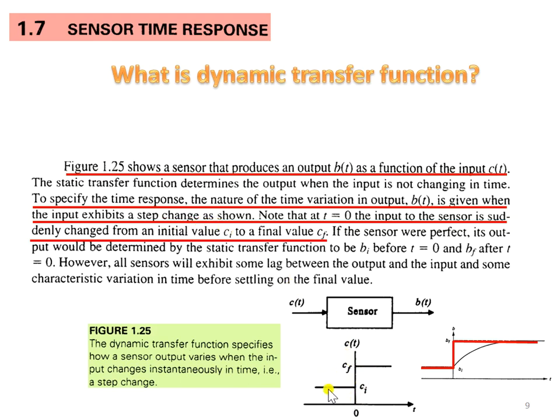Note that at t equals 0, the input to the sensor suddenly changed from Ci to Cf. If the sensor were perfect...